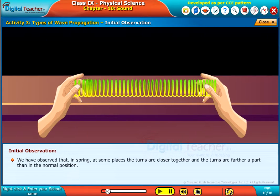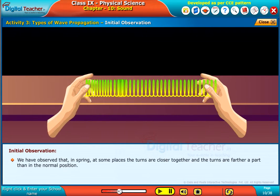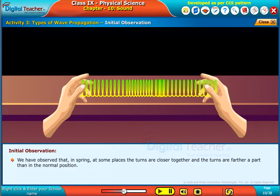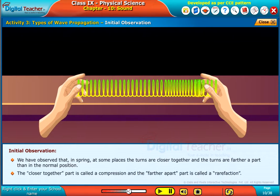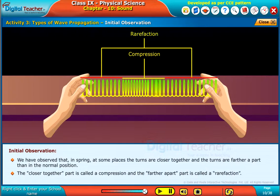We have observed that in spring, at some places, the turns are closer together and the turns are farther apart than in the normal position. The closer together part is called a compression and the farther apart part is called a rarefaction.